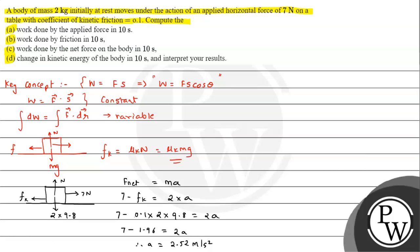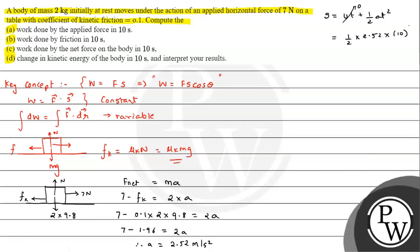Now we need displacement for calculating work done. Since this is a case of accelerated motion, by the second kinematical equation s = ut + ½at². The block was initially at rest so u = 0, giving s = ½ × 2.52 × (10)² = ½ × 2.52 × 100 = 1.26 × 100 = 126 meters. So the displacement in 10 seconds is 126 m.